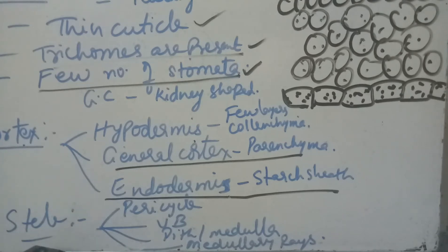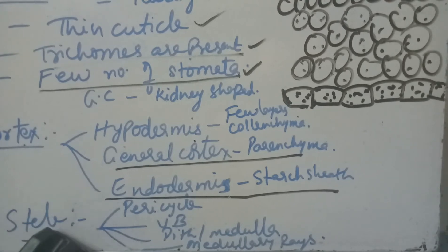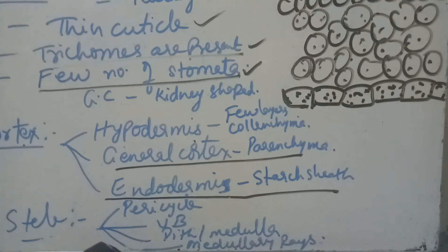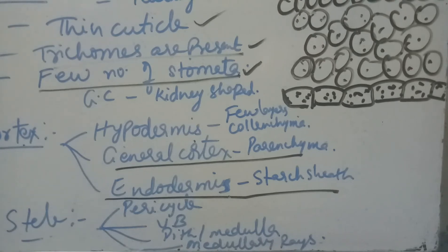The innermost distinct zone of dicot stem is the stele. The stele shows four distinct zones: pericycle, vascular bundles, pith or medulla, and medullary rays. The stele is the central part of the dicot stem, and these four zones are present within it.